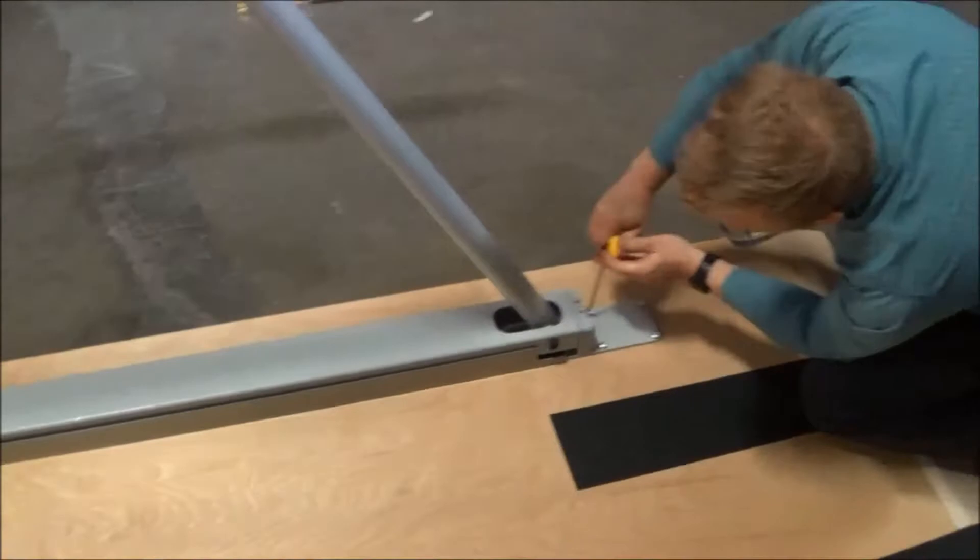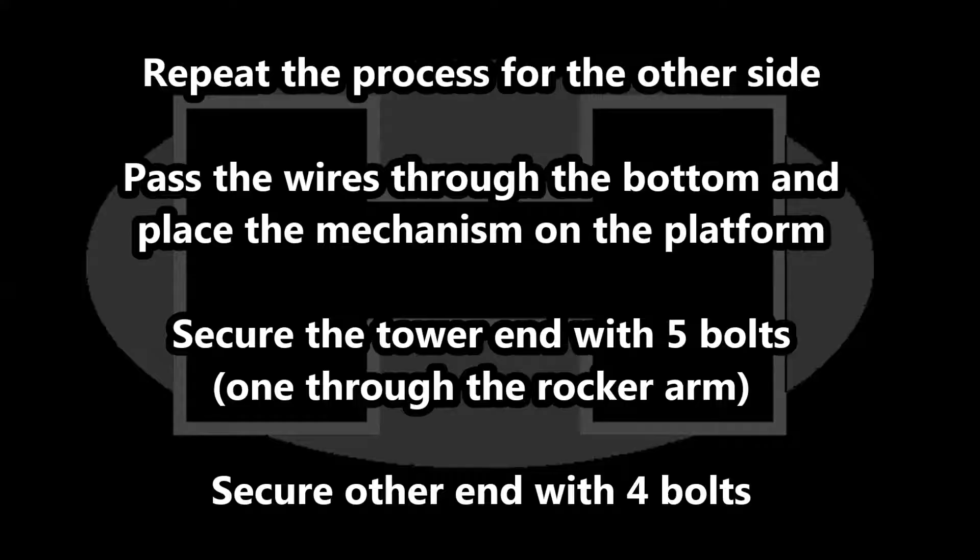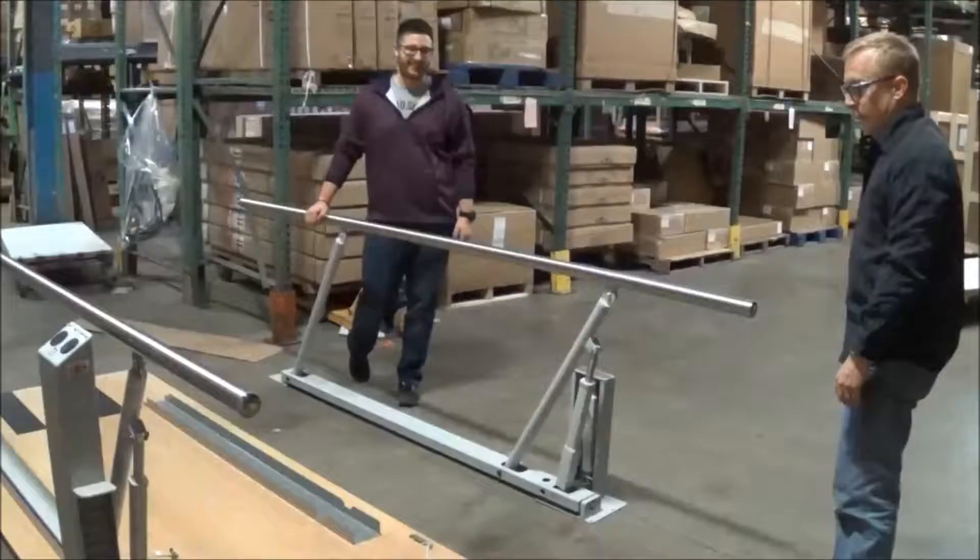Repeat the process for the other side. Unbolt the unit from the skid. Pass the wires through the bottom and place the mechanism on the platform. Secure the tower end with five bolts. Don't forget the one through the rocker arm under the grommet. And secure the other end with four bolts.